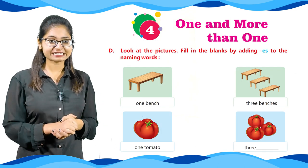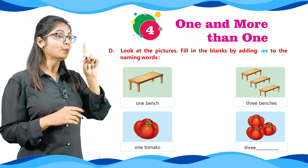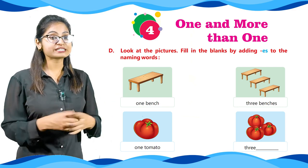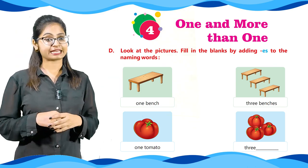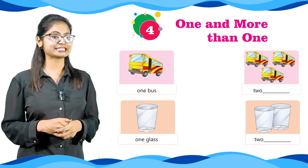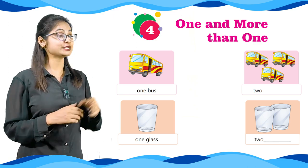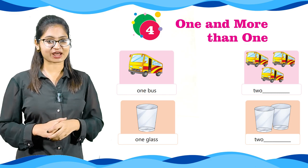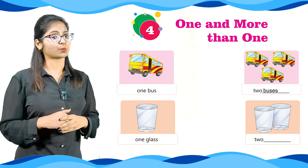Now let's look at Part D: Look at the picture and fill in the blanks by adding ES to the naming words. In picture number one we have given one bench, and in the next we have given three benches — we used ES, so we write three benches. Next we have a picture of tomato, and next you can see we have tomatoes because it's more than one. Next we can see a bus, which we use for travel, and in the next picture there's more than one bus, so we write buses. Next we have a picture of a glass — there's one glass and there are two, so we write two glasses.